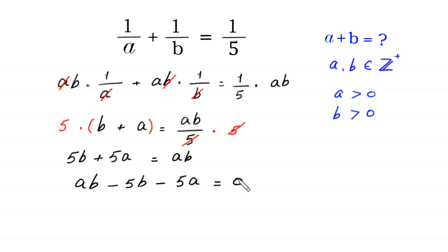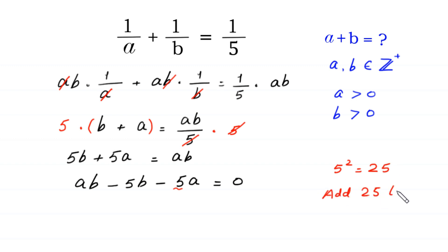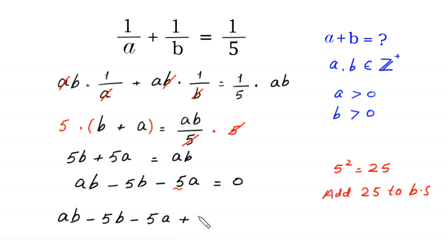Now, the square of 5 is 25, so we add 25 to both sides of this equation. This gives us ab minus 5b minus 5a plus 25 equals 25.